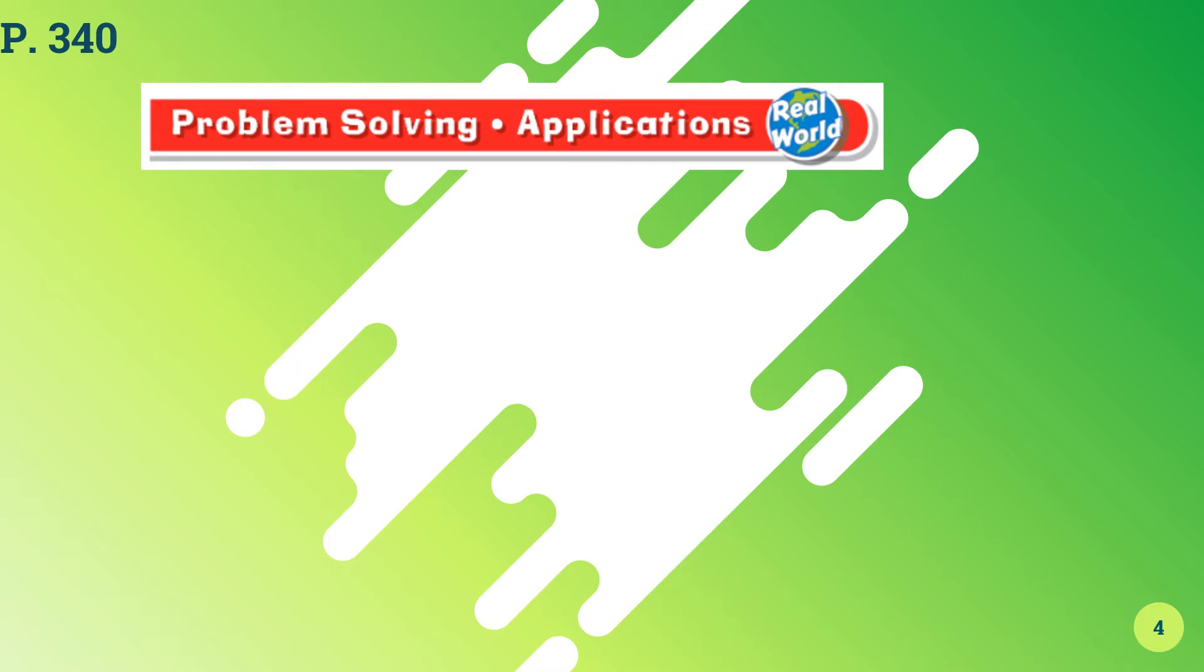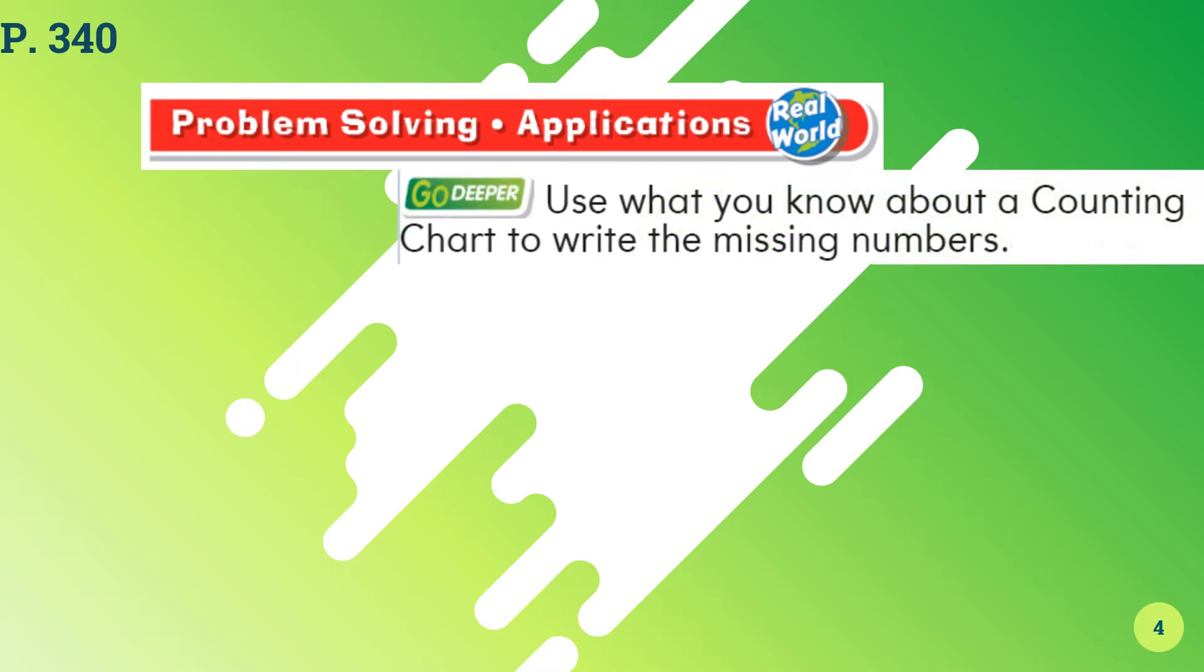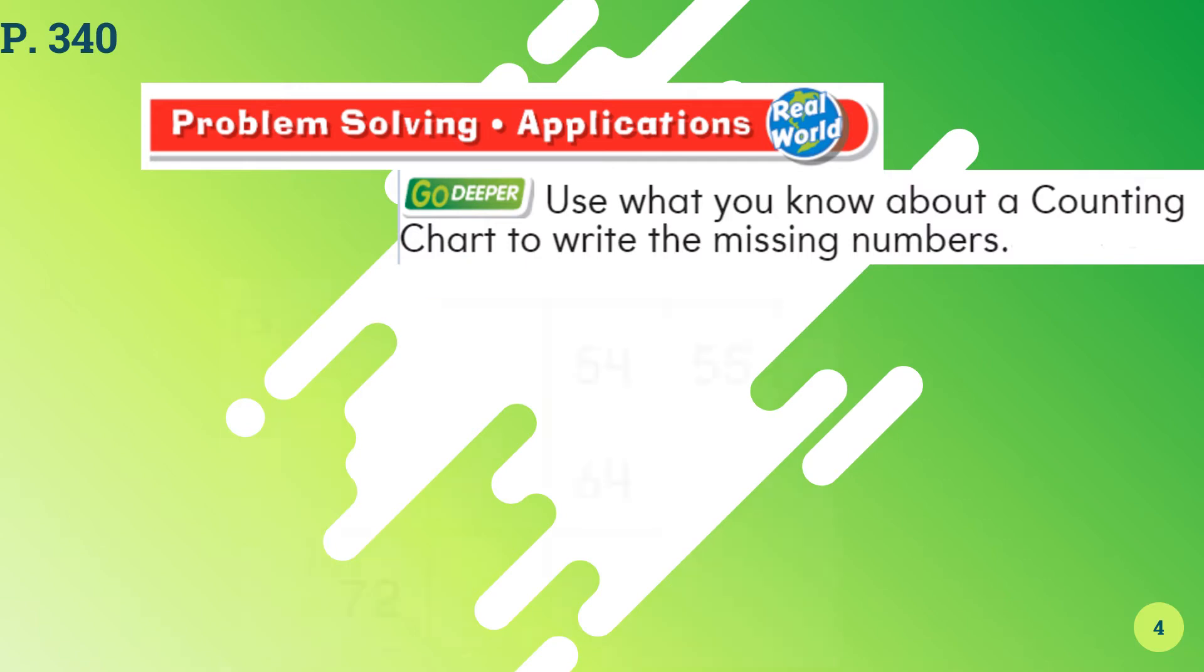This is a problem-solving application question. It says use what you know about a counting chart to write the missing numbers. Let's look at the question. You see there are some missing numbers. You have to fill in with the numbers according to the number sequence. Now in the first row you see there is 54 and 55 and there is a block empty before 54. Now which number comes before 54? Let's see. It's 53. We have 53, we have 54 and we have 55.